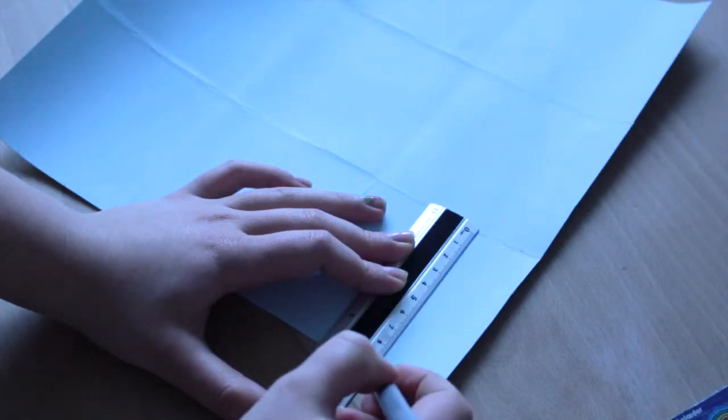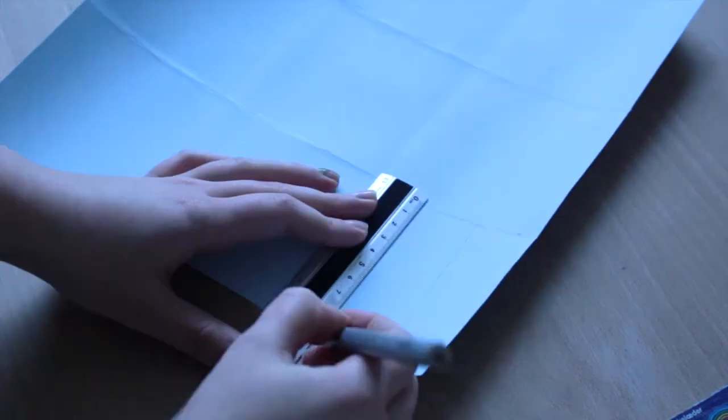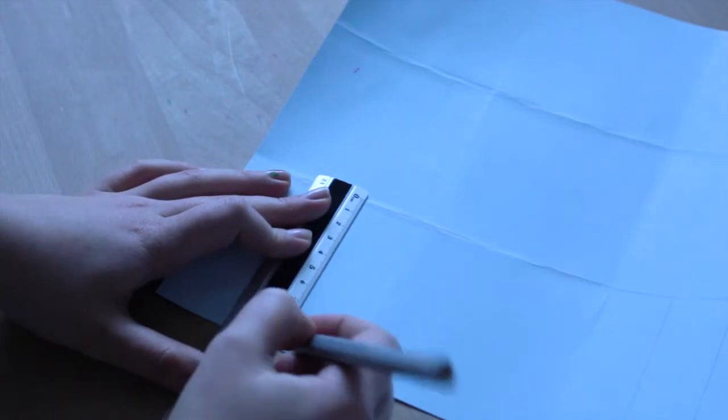Then make a line from the marking up to the scoring line, and remember to do it on all the edges. This is what it should look like now.